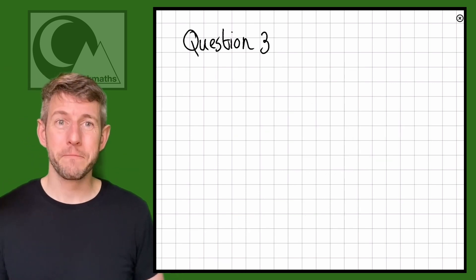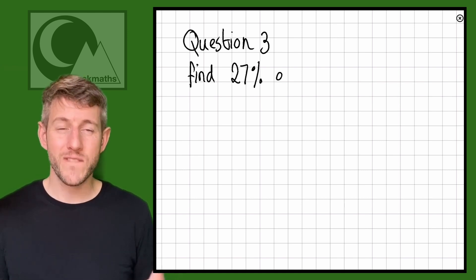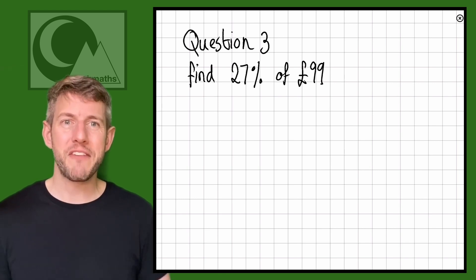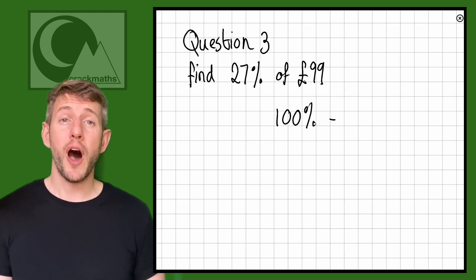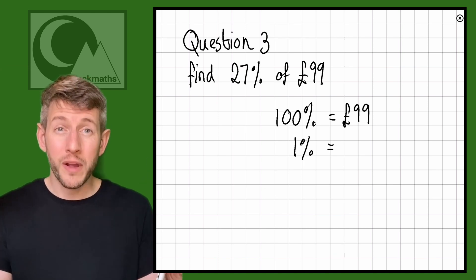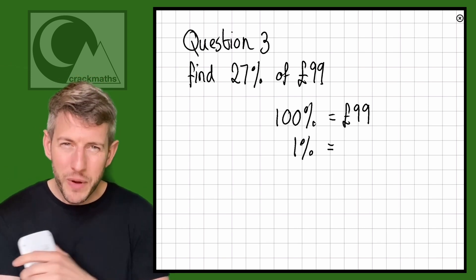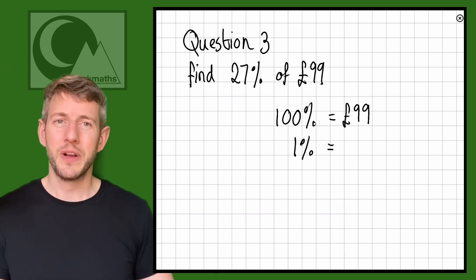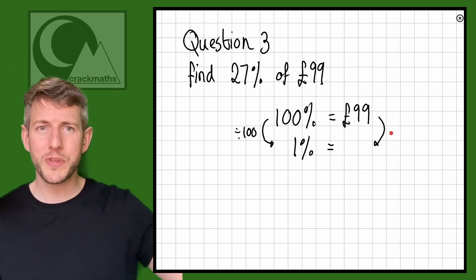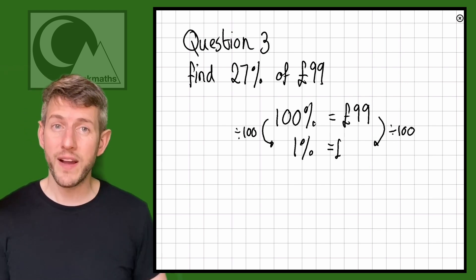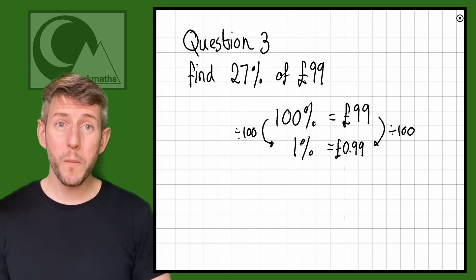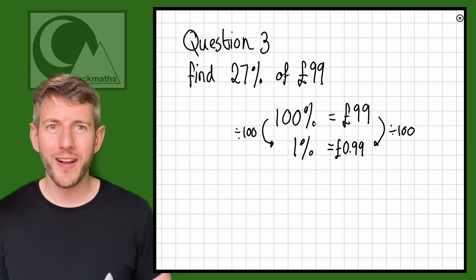Let's try one more question — this time finding 27% of £99. This one is even trickier, but with a calculator we have a fail-safe method. If 100% is £99, we can go straight to 1%. The beauty of finding 1% is that once we have it, we can find any percentage. 100 divided by 100 gives us 1%, so 99 divided by 100 equals 0.99. So 1% equals £0.99, or 99 pence.